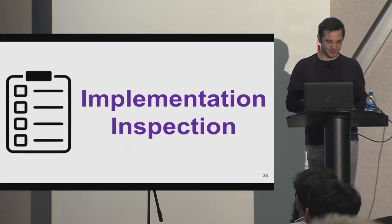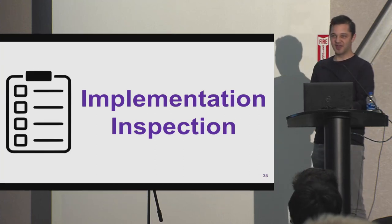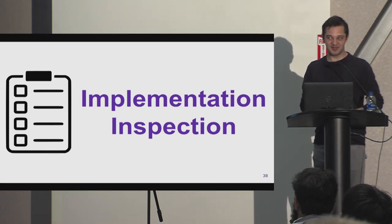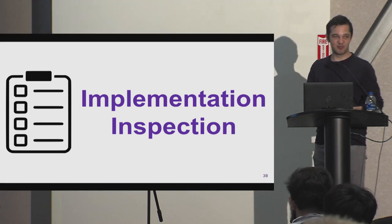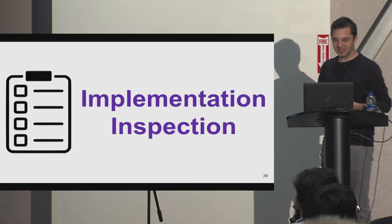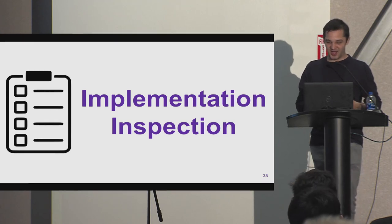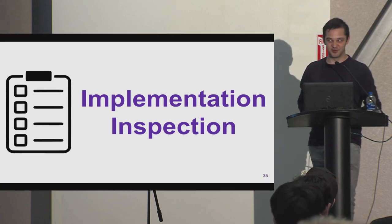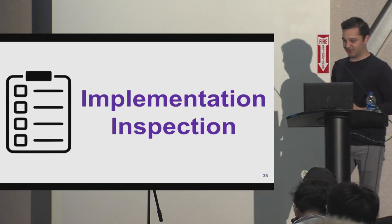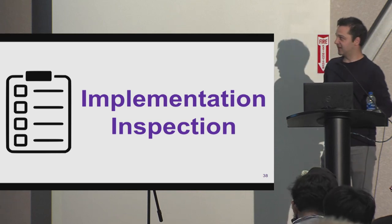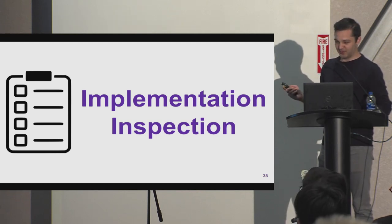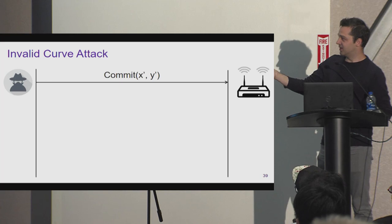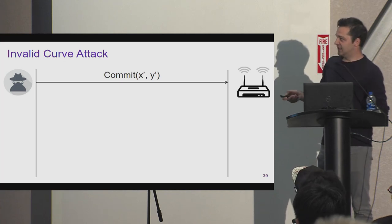To recap: we have timing attacks that were warned about but not properly defended against, new timing attacks against the Brainpool case, and cache attacks. On top of these side channels, we also found implementation-specific vulnerabilities. The first is an invalid curve attack.